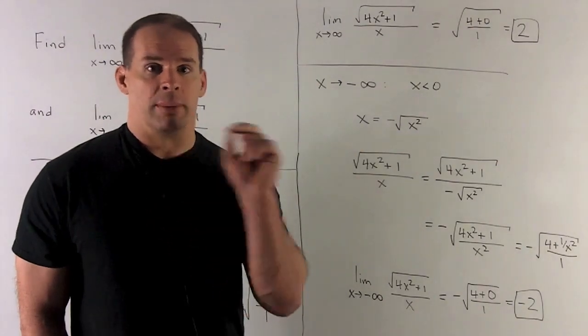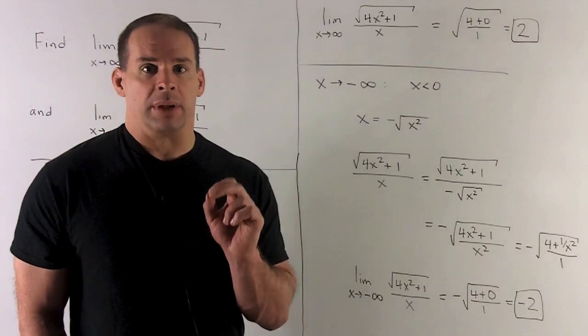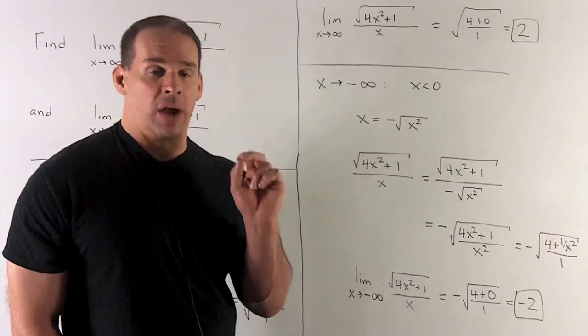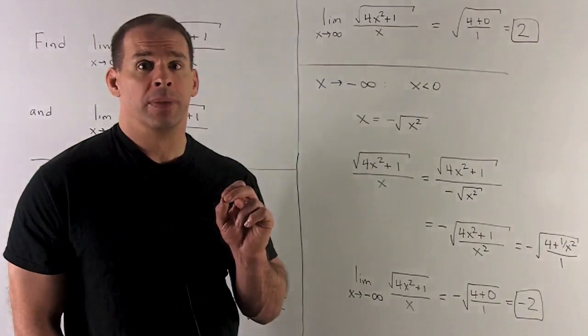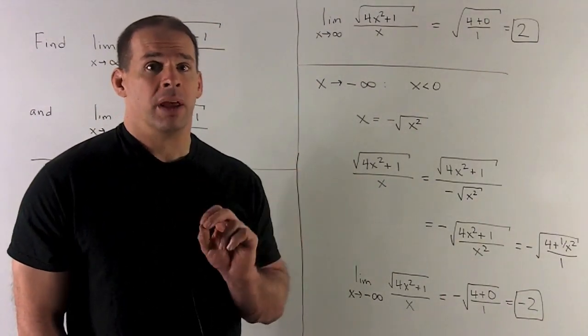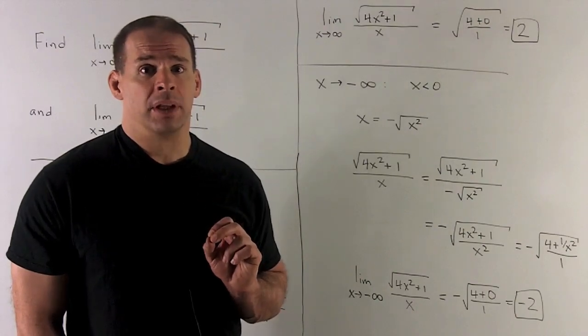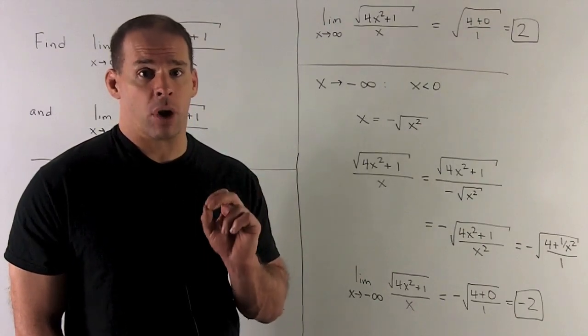I write out our term in the limit. What's that going to be? Well, where I have x, I'm now going to put minus square root of x squared. Pull the minus sign out in front, put everything under a square root sign, and then we proceed as we did before.